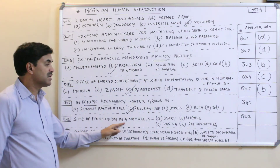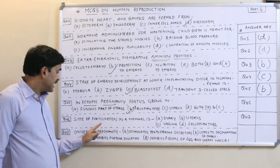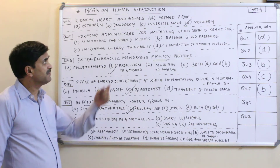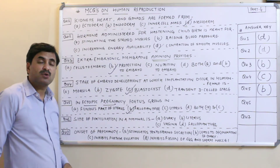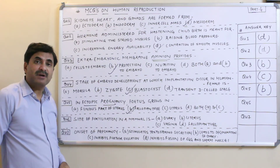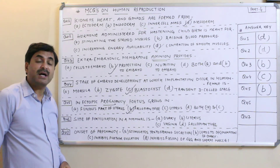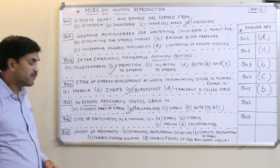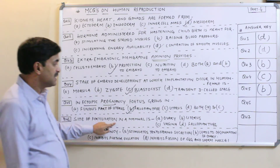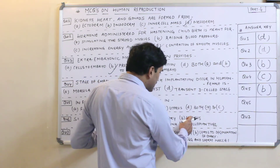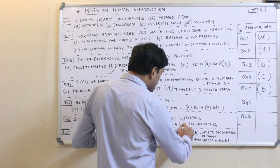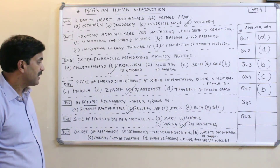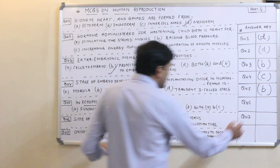Question number six: the site of fertilization in a mammal is? In human reproduction, fertilization is internal and occurs at the ampulla-isthmus junction of the fallopian tube (oviduct). The options are ovary, uterus, vagina, or fallopian tube — the answer is fallopian tube. Question number six answer is D.